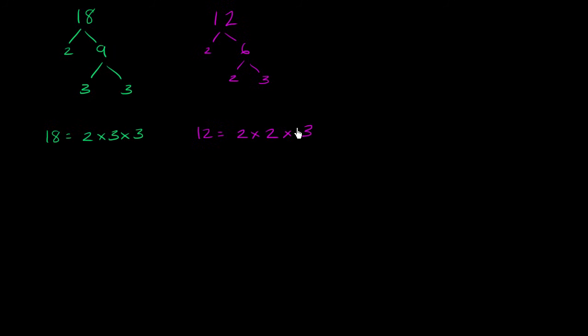Now the least common multiple of 18 and 12, let me write this down. So the least common multiple of 18 and 12 is going to have to have enough prime factors to cover both of these numbers, and no more, because we want the least common multiple, or the smallest common multiple.